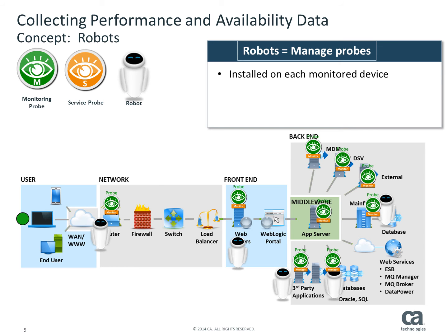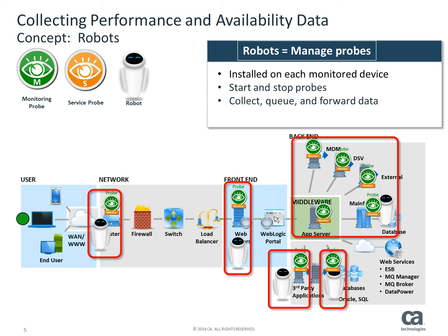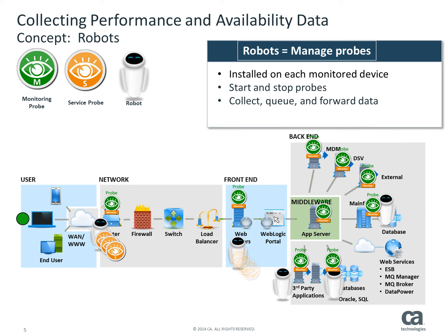Robots are a small piece of software installed on devices that are monitored to manage probes — specifically, to start and stop their probes at the required times, and to collect, queue, and forward the monitoring data. All robots are basically identical; it is the collection of probes they manage that distinguishes them. For example, a robot may be assigned to each router, and another robot may be assigned to back-end servers and databases. Robots use probes to manage their primary tasks.